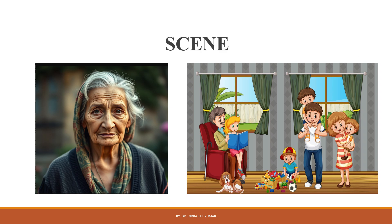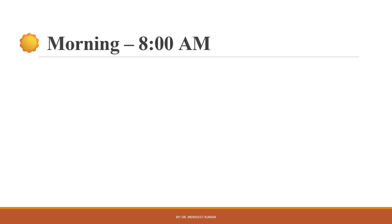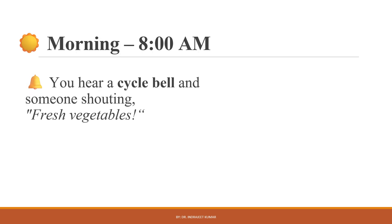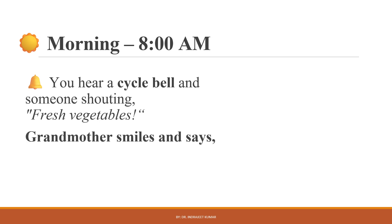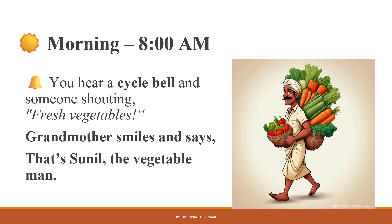Let me explain AI with a very simple real-world example. Imagine a family of seven including a grandmother sitting together in a dining hall. Suddenly someone knocks the door. In the morning at 8 AM, you hear a cycle bell and someone shouting 'fresh vegetables.' You couldn't guess who it would be, but grandmother smiles and says, 'That's Sunil, the vegetable man.'